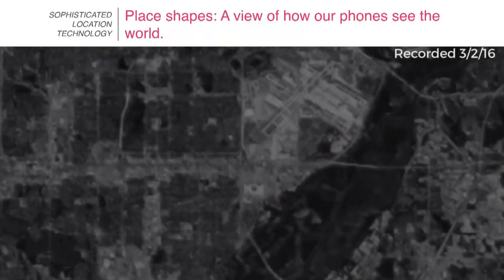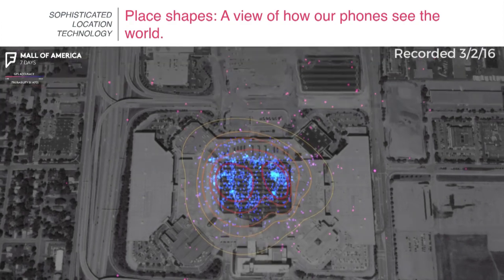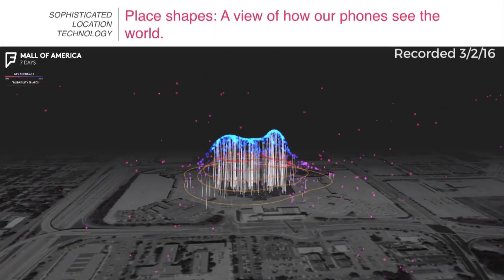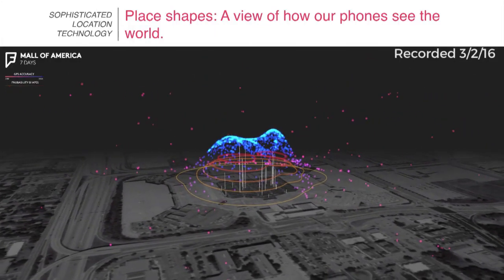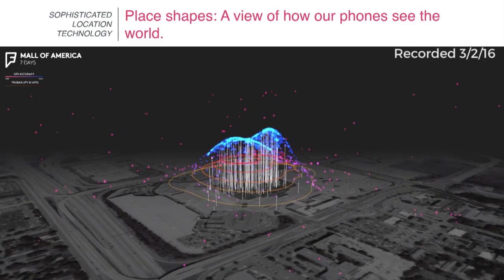Part of it is understanding every business in the world as a shape, the way phone sensors see it. This is the Mall of America, which is pretty easy from a satellite map to draw. These dots are all a week of check-ins, just one week of check-ins. You get this sort of machine learning truth — the blue dots are within the polygon, and we get these concentric circles to build the shape.